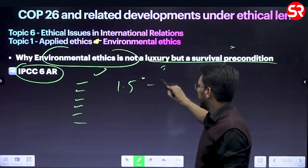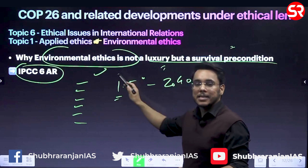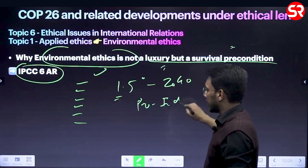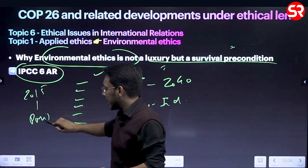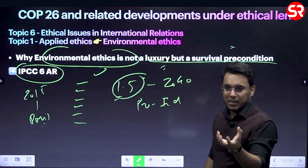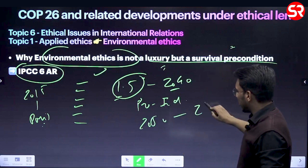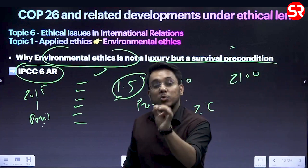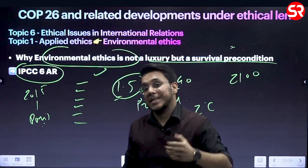The temperature rise will exceed 1.5°C before 2040 - around 2035-2036 - relative to pre-industrial levels. In 2015, the Paris Agreement set a target to restrict temperature rise to 1.5°C, but the IPCC says this threshold will be crossed before 2040. By 2050 it will reach 2°C, and by 2100 a rise of 2.2 to 3.5°C is projected.